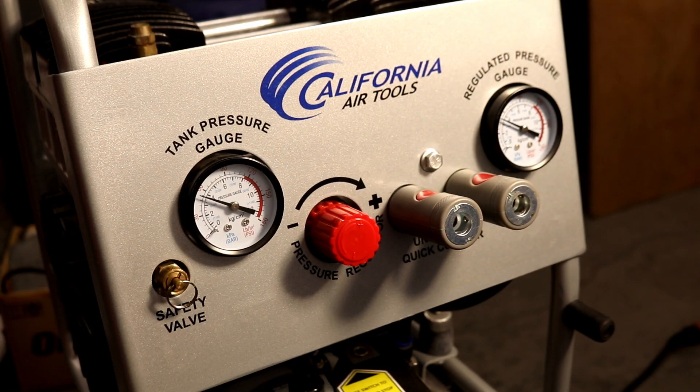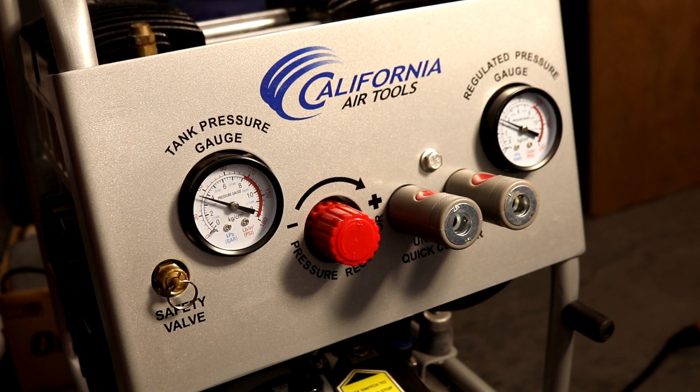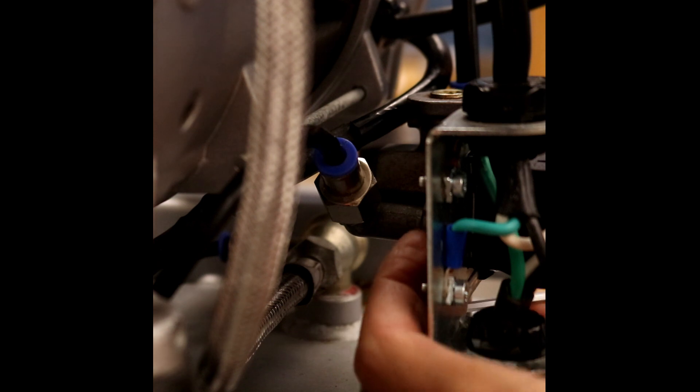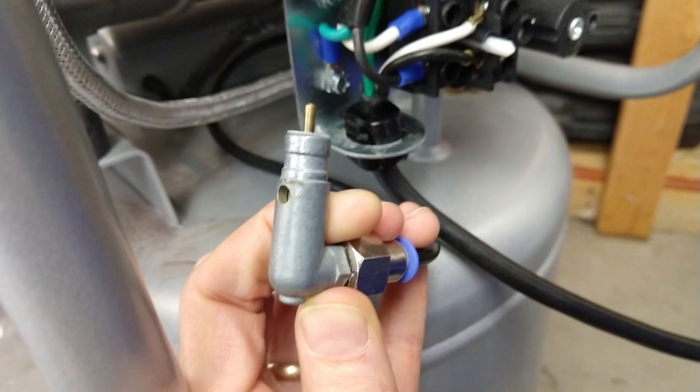The next leak to fix is from the unloader. This leak causes the compressor to run three times longer than needed. The unloader releases cylinder pressure after the compressor stops, and if the unloader does not function, the initial load on the motor will be high, likely stalling and possibly self-destructing the motor.